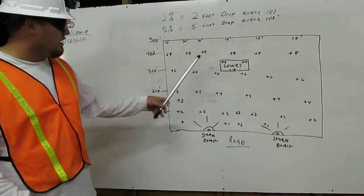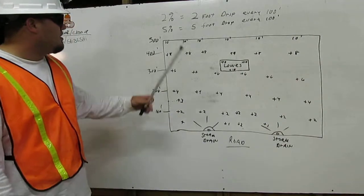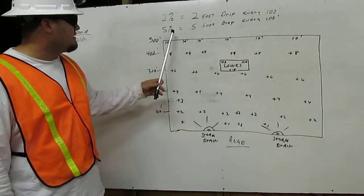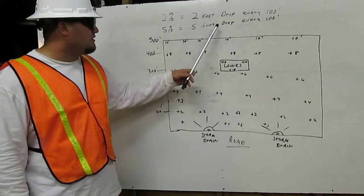For example, we're going to have the building loads. Here's our 2% and that equals 2 foot drop every 100 feet. 5% equals 5 foot drop every 100 feet.